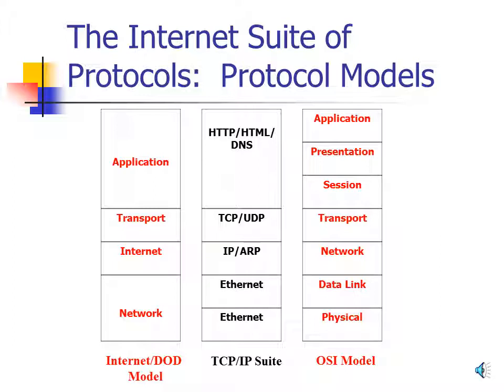For historical purposes, you should be aware that there is a model the TCP/IP suite was developed under called the Internet model, sometimes called the DOD model. This is a four-layer model rather than the OSI model's seven-layer model, and the TCP/IP suite also matches up to it. However, you really don't hear much discussion about the Internet or DOD model anymore — everything is compared to the OSI model.